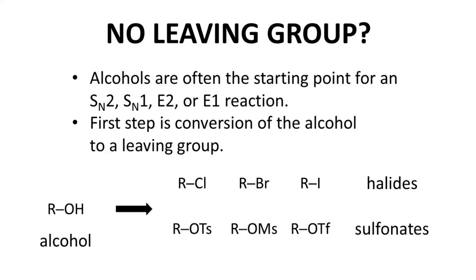It's fairly common that you do not have a leaving group, and the first step of the transformation involves making a leaving group. These reactions almost always start with an alcohol. Alcohols are readily converted to a halide. You'll also often see other leaving groups, the sulfonates, the most common of which is the tosylate, OTS. You might also encounter mesolate or triflate.